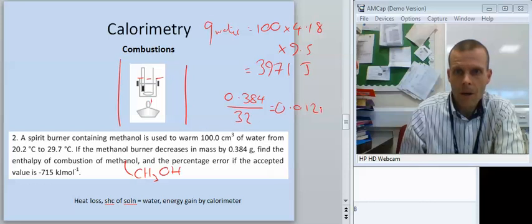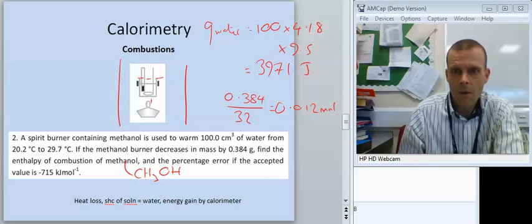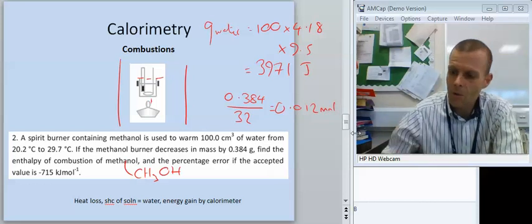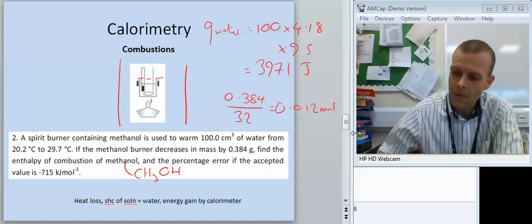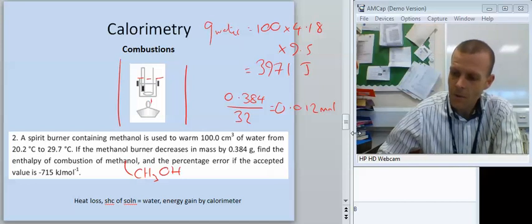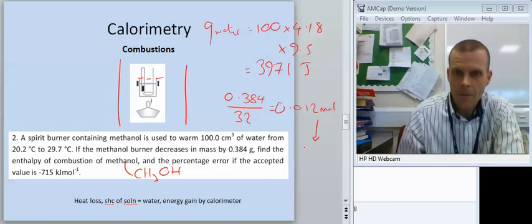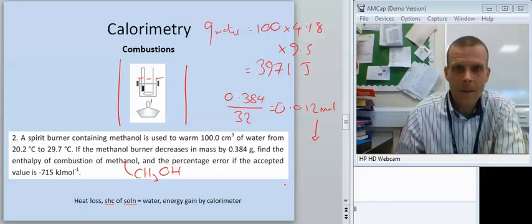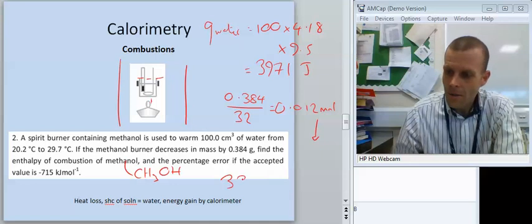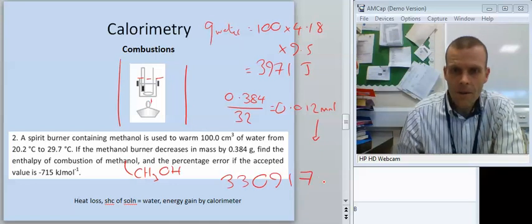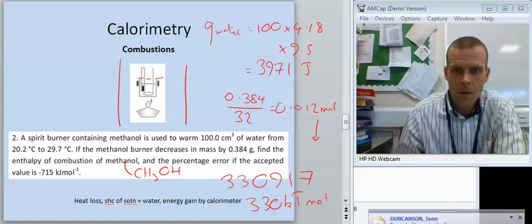And so that becomes 0.384 divided by 0.012. And then to get my answer in joules per mole, I'm going to divide this by the number of moles. So that's 3, 3, 0, 9, 1, 7 joules per mole, which is 330 kilojoules per mole.